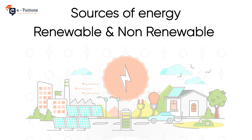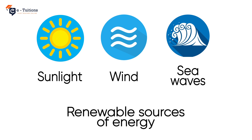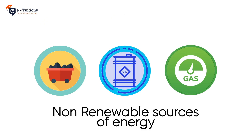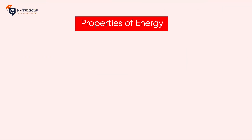We obtain energy from two sources: renewable and non-renewable. Renewable sources of energy are often referred to as energy that comes from natural sources, for example wind, sunlight, and sea waves. Non-renewable sources of energy are limited resources that will eventually run out over time, such as oil, natural gas, and coal. Let's have a look at the properties of energy.